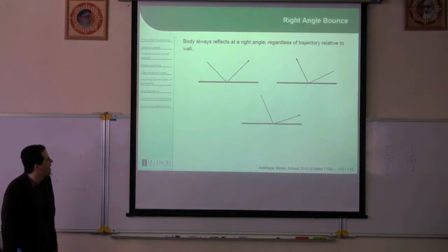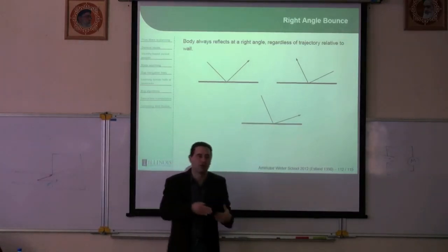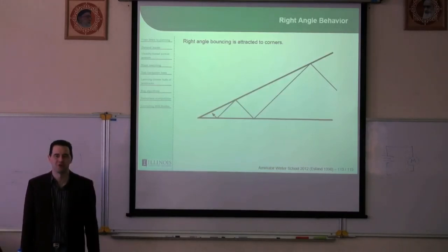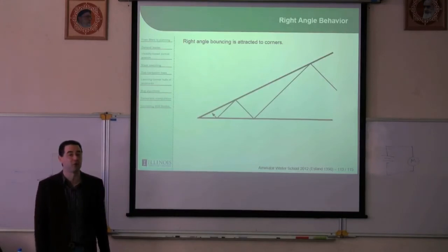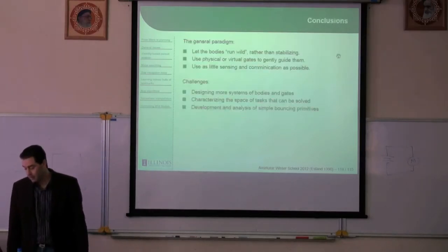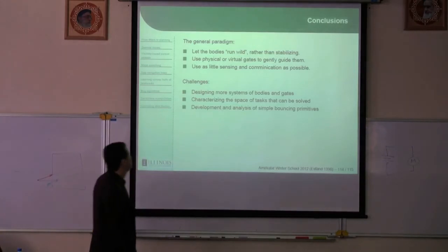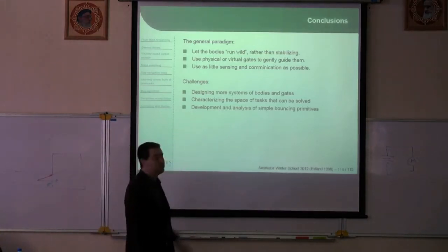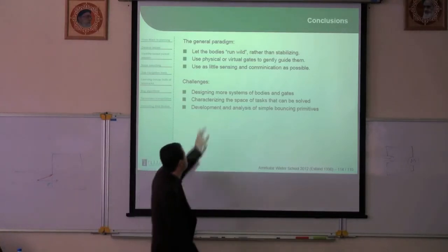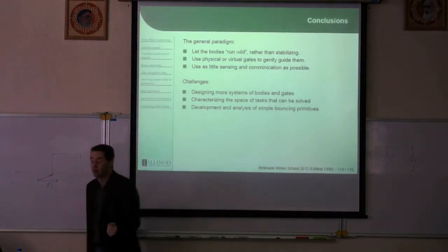What about a right-angle bounce? I come in and go out at exactly a right angle with respect to my incoming direction. It turns out that gets attracted to corners — the robot will find corners. The previous normal bounce went away from corners; the right-angle bounce goes to corners. I would like to automatically characterize these by feeding in a polygon and analyzing all these structural behaviors. The general idea with wild bodies: let the bodies run wild rather than stabilizing them, use physical or virtual gates to guide them gently, and use as little sensing and communication as possible.